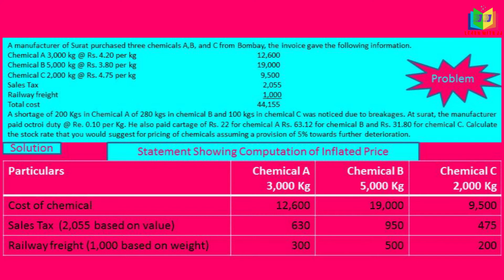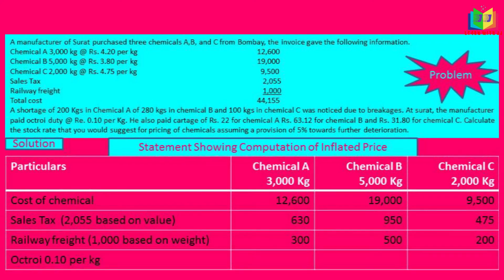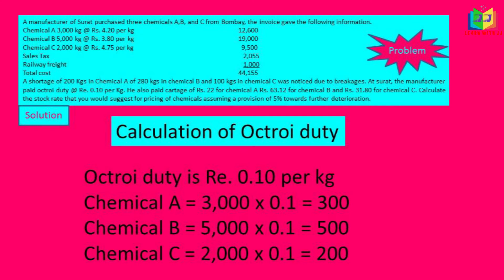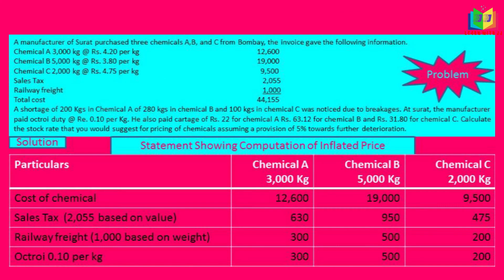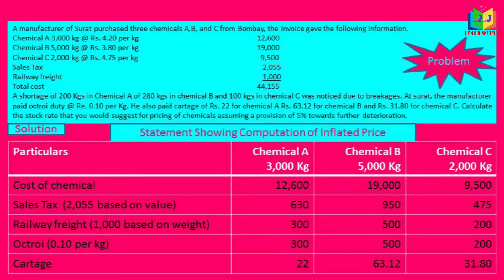Next we calculate the octroi duty at Rs 0.10 per kg. For chemical A: 3,000 × 0.10 = Rs 300. For chemical B: 5,000 × 0.10 = Rs 500. For chemical C: 2,000 × 0.10 = Rs 200. The cartage is Rs 22 for chemical A, Rs 63.12 for chemical B, and Rs 31.80 for chemical C, which are entered directly as given.